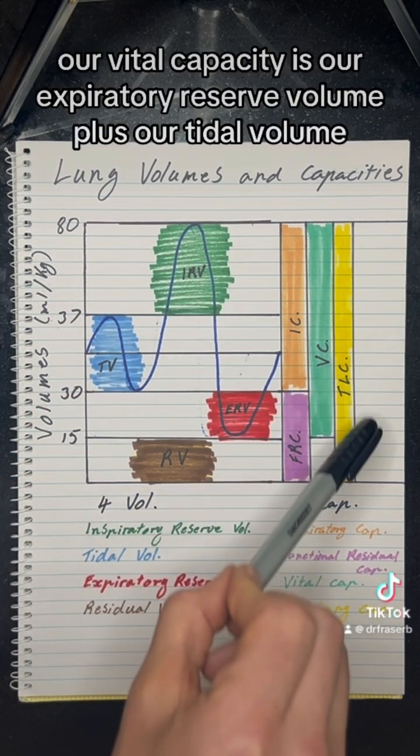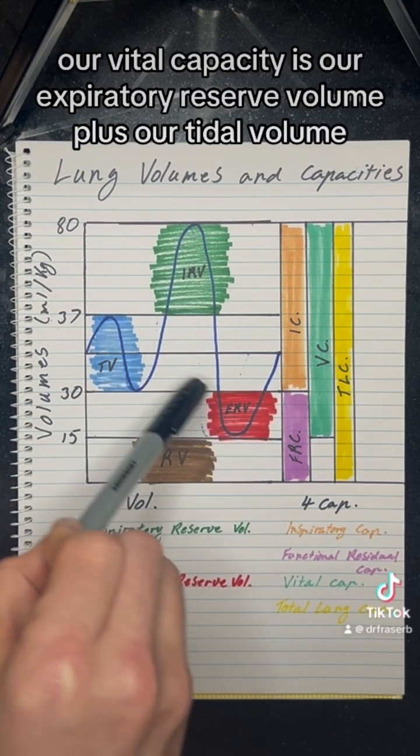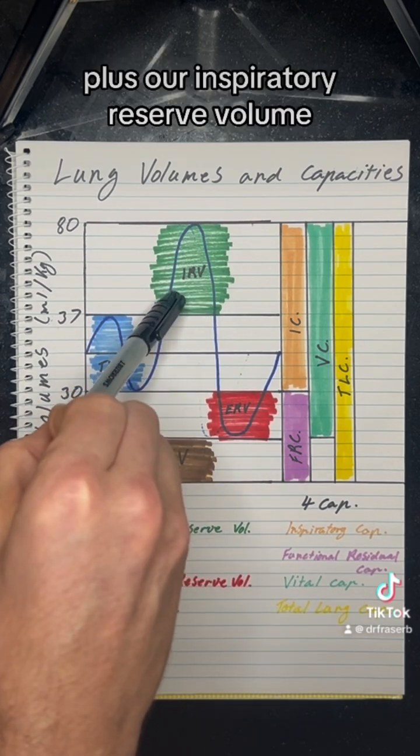Our vital capacity is our expiratory reserve volume plus our tidal volume plus our inspiratory reserve volume.